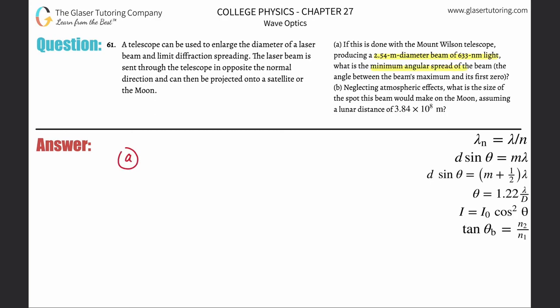Alright, so letter A, we've seen this now a couple of times, that the minimum angular spread of the beam is going to be equal to 1.22 multiplied by the wavelength divided by the diameter of the beam, and this is the wavelength of the beam. So just plug in the value.